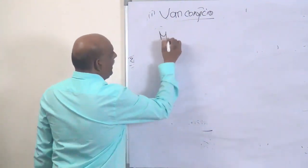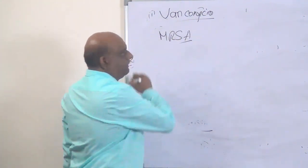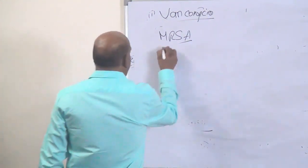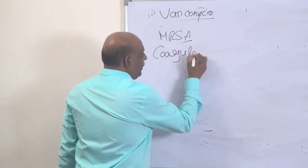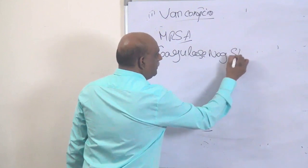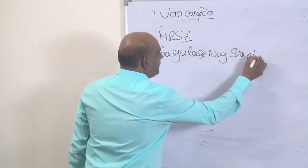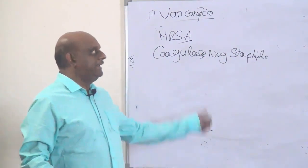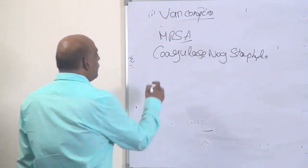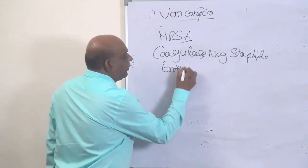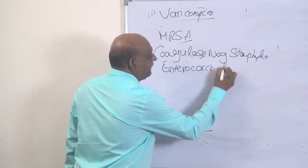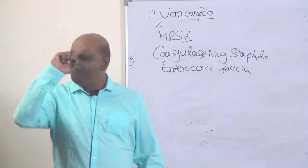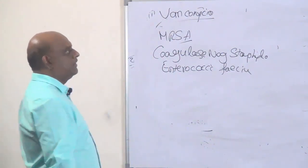Vancomycin is useful for MRSA — methicillin-resistant Staphylococcus aureus. Then coagulase-negative staphylococci — a lot of times whenever you put IV lines, the infection is coagulase-negative staphylococci. Then Enterococcus faecium — vancomycin should be your answer in tomorrow's exam.